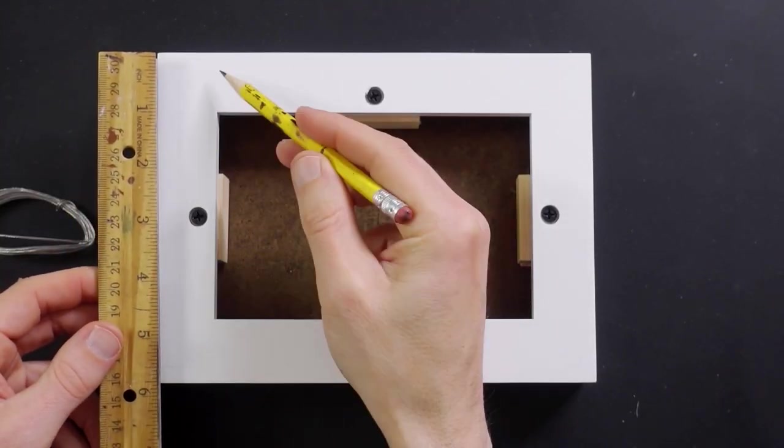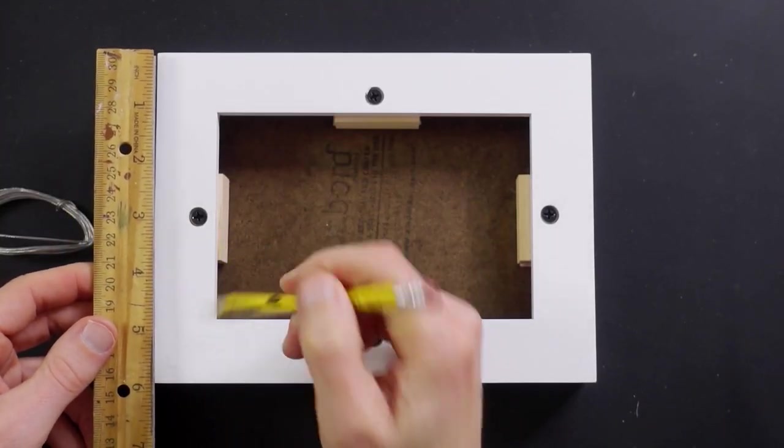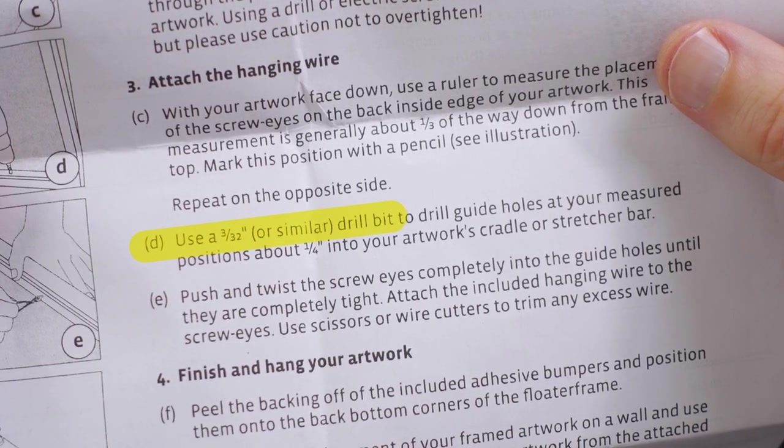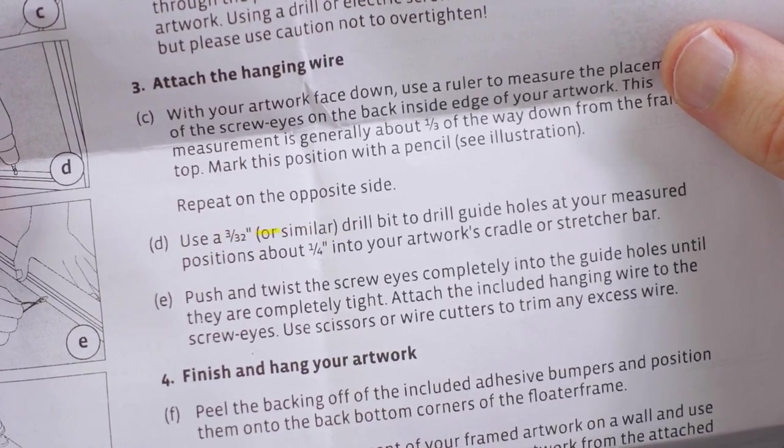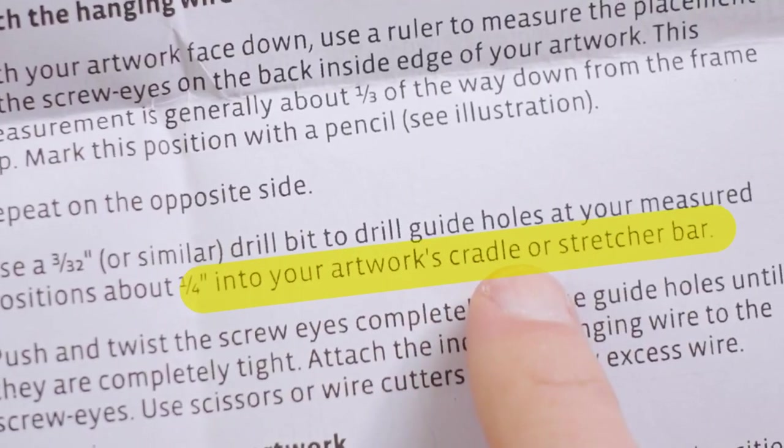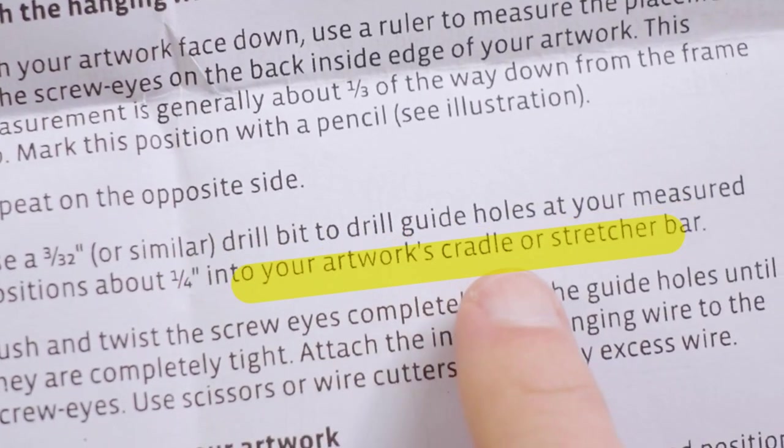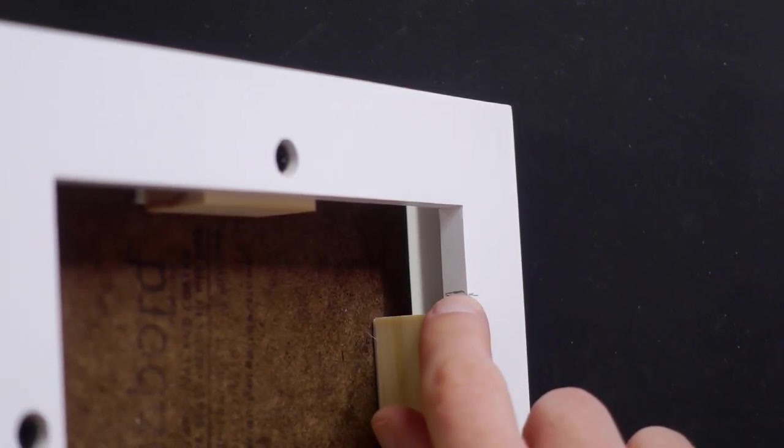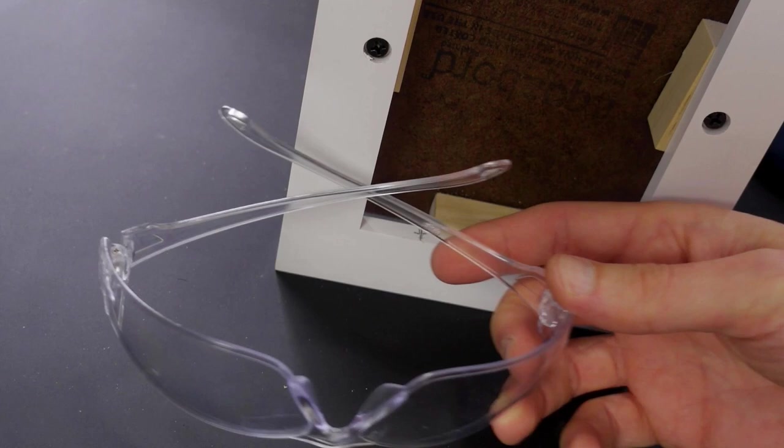You want to attach the wire about a third of the way down. So this is six inches so that'd be two inches. They recommend using a three thirty-seconds of an inch drill bit to drill the guide holes. If this were a cradled panel or a canvas you would drill into that but since there's nothing really to drill into here you would drill into the side of the frame. Before you drill you want to put your safety glasses on.